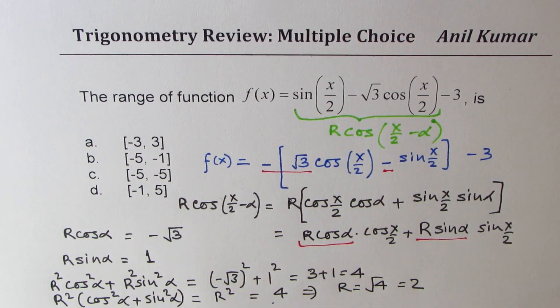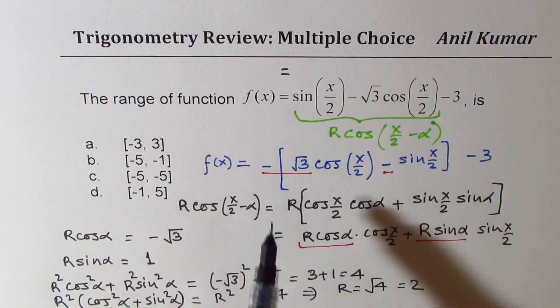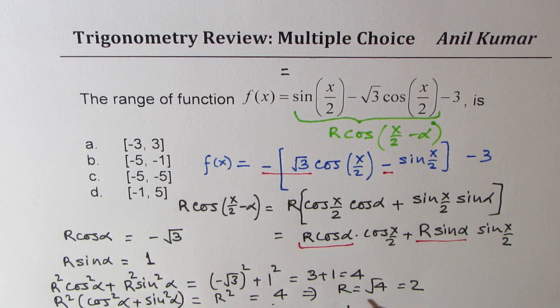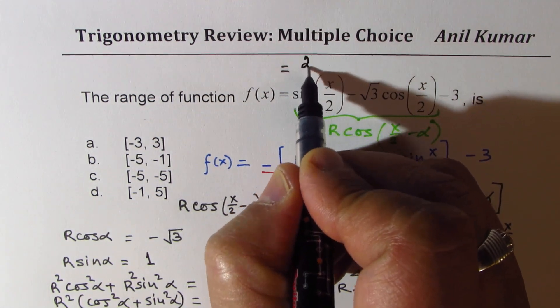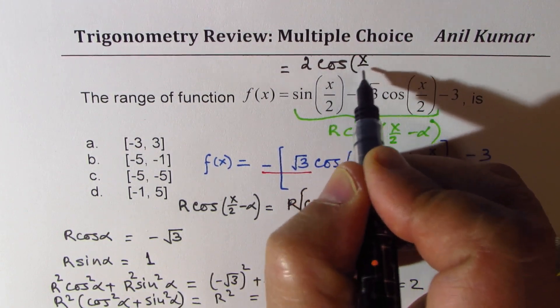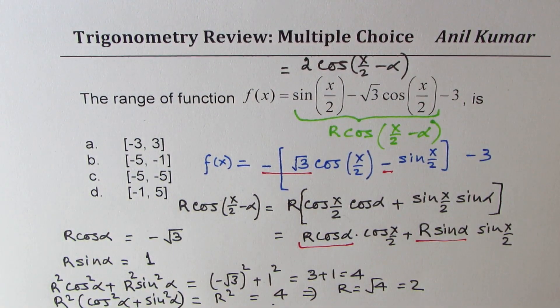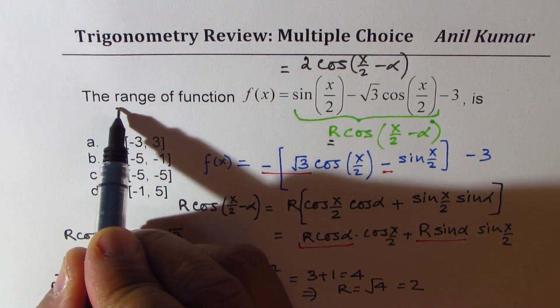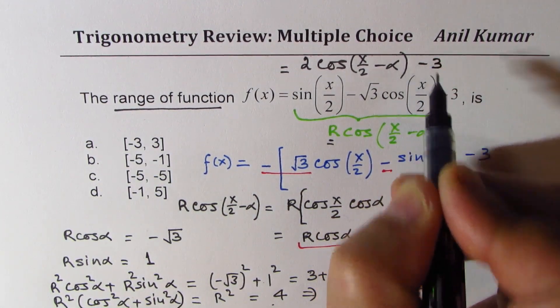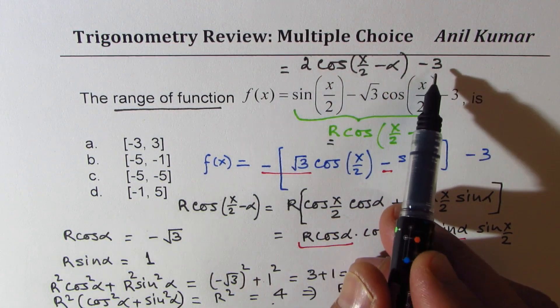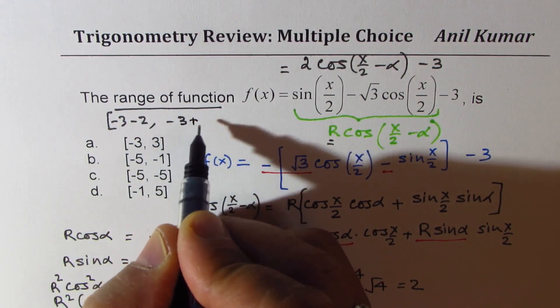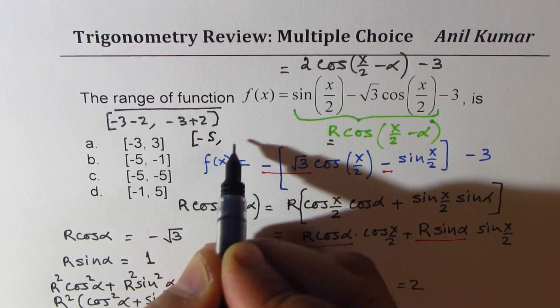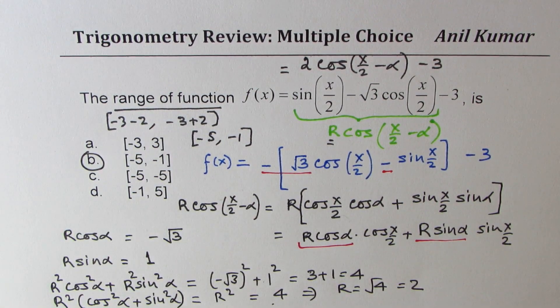So the given expression could now be written as 2 cos x by 2 minus alpha minus 3. Now that really means that the range will be from minus 3 minus 2 to minus 3 plus 2, which is from minus 5 to minus 1. So option B is the right option.